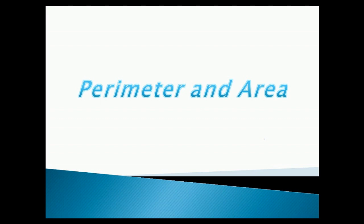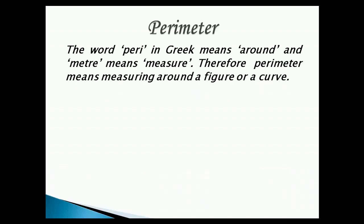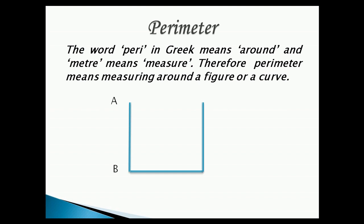Hello children. Today we are going to study about perimeter and area. Perimeter. The word 'peri' in Greek means around and 'meter' means measure. Therefore, perimeter means measuring around a figure or a curve. In other words, the perimeter is the length of the outline of a shape. Remember, we can find the perimeter of a closed figure or a closed curve only.